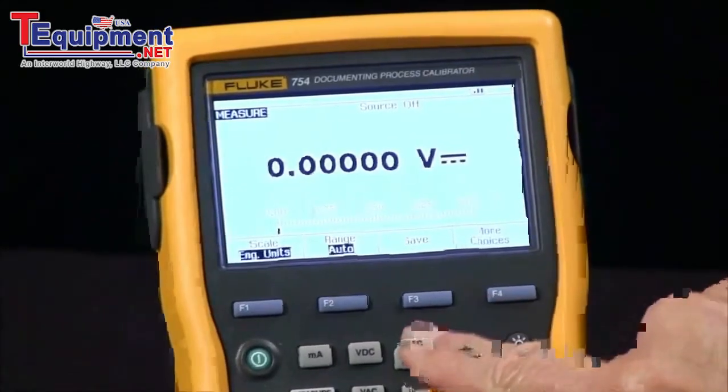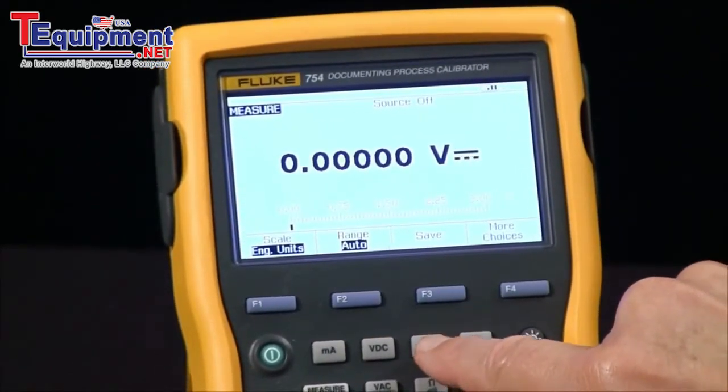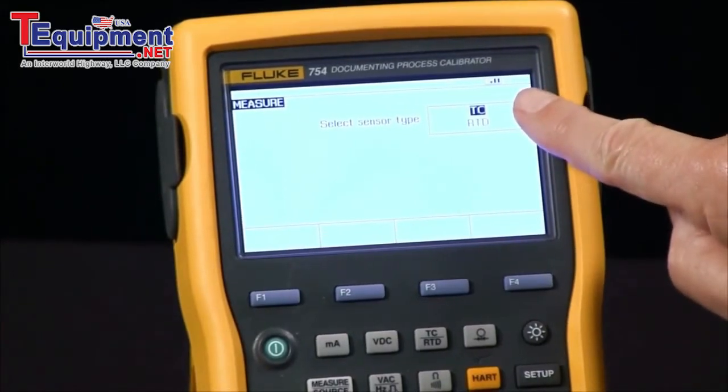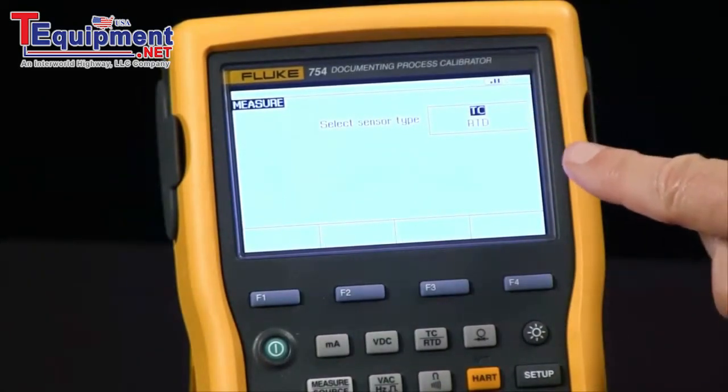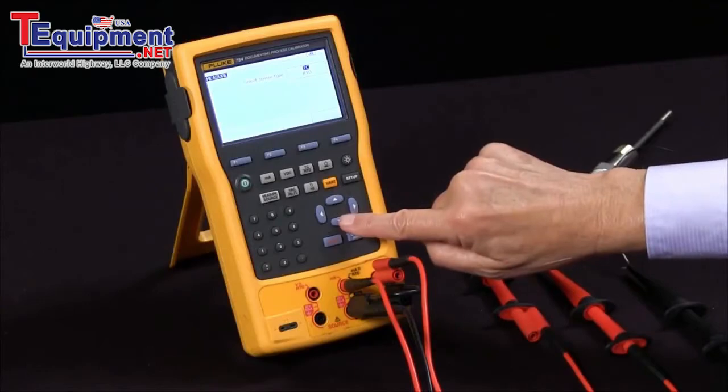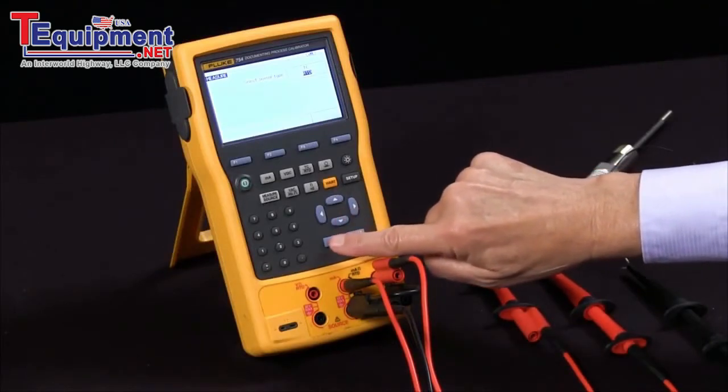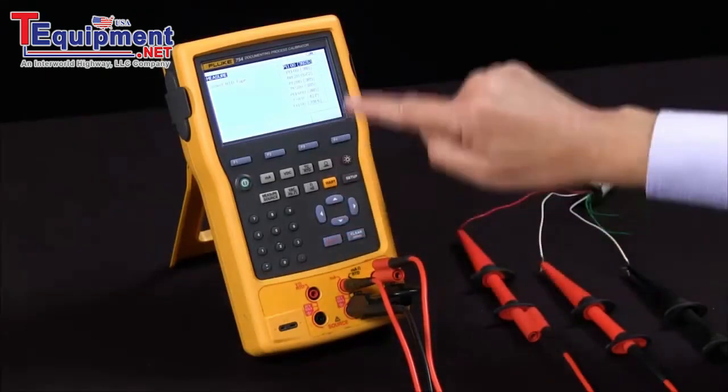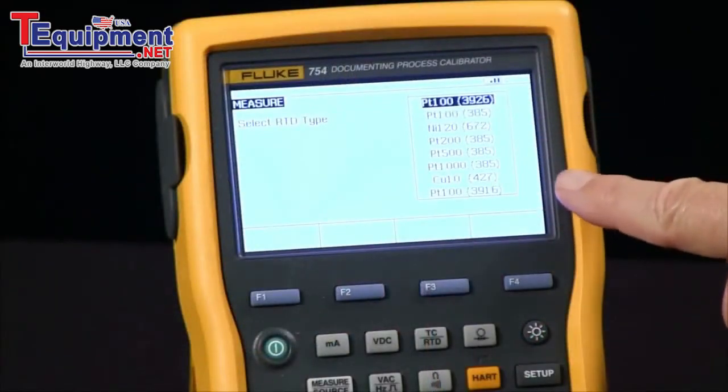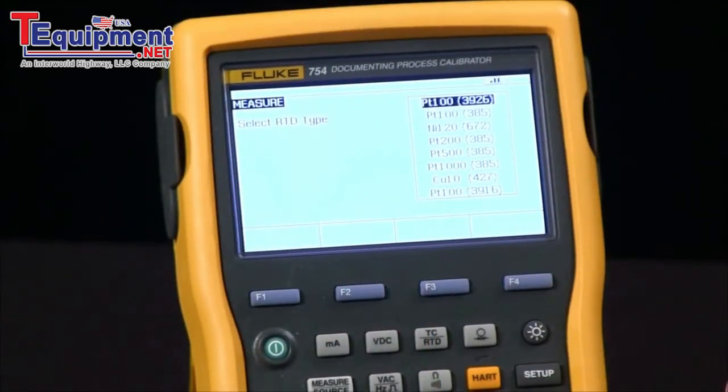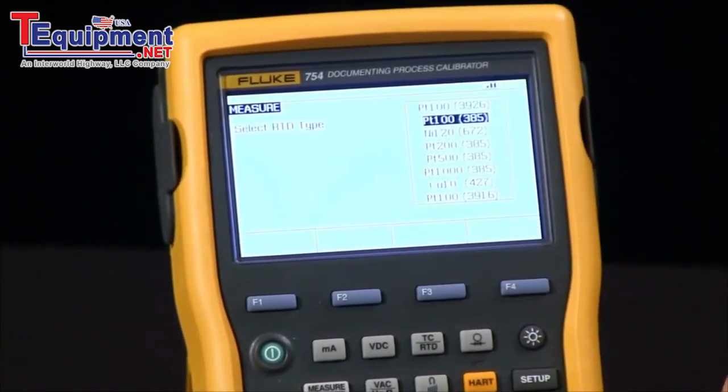All we have to do is push the thermocouple RTD button and we get a choice of thermocouple or RTD. I'm going to arrow down, highlight RTD, and hit enter. Then we get a choice of different types of RTDs. I'm going to select platinum 100 ohm.